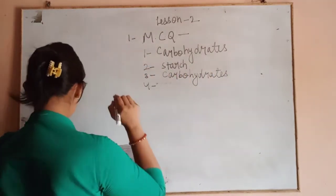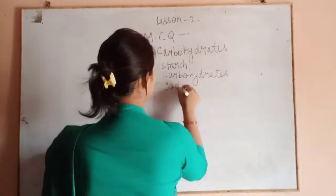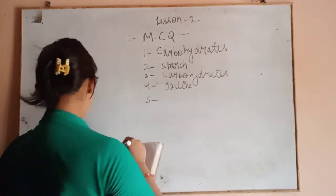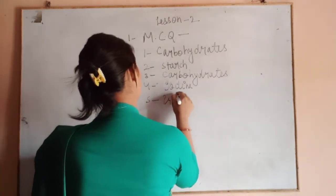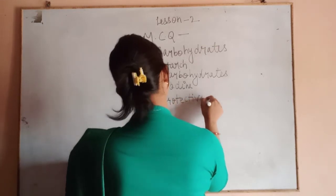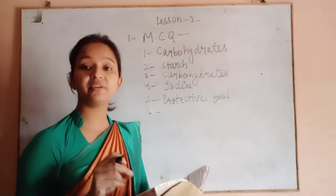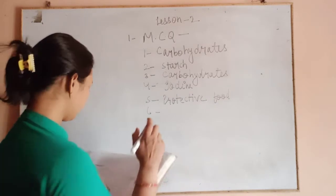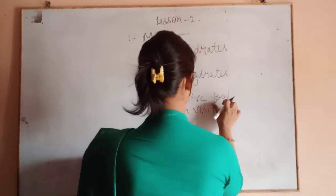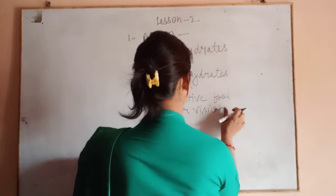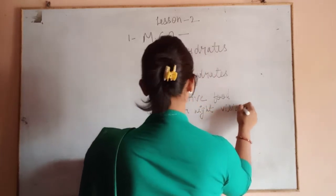The fourth multiple choice question: deficiency of iodine leads to goiter. The fifth multiple choice question: vitamins and minerals are protective foods. The sixth question: deficiency of vitamin A leads to poor night vision.